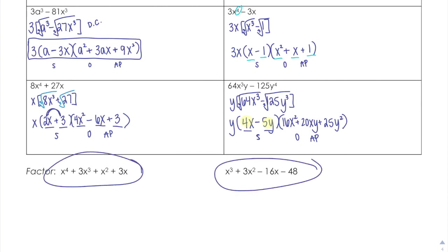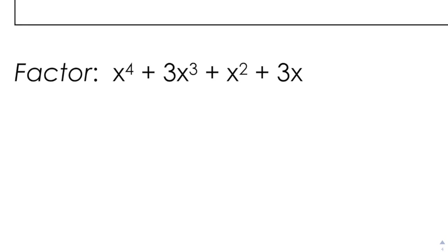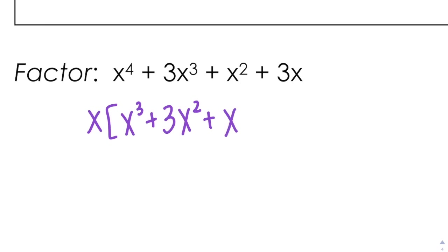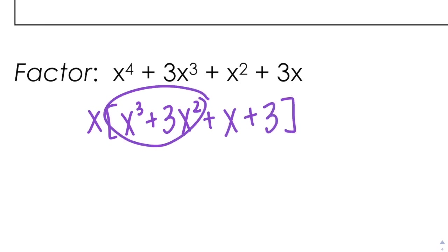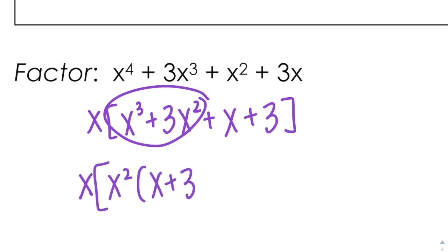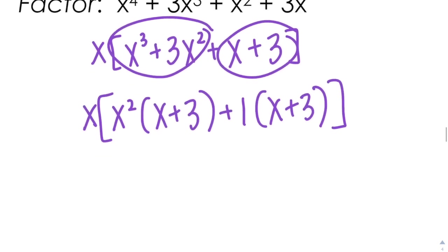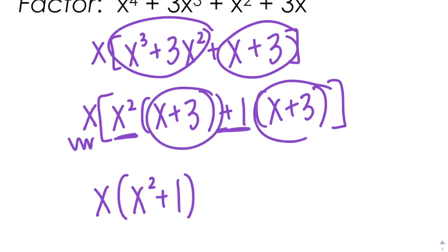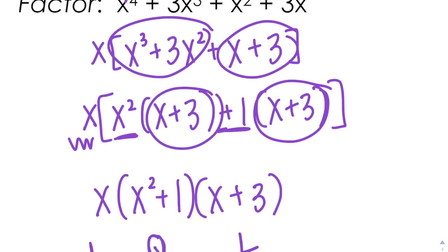Now if I look at these two down here — polynomials with four terms — they're not perfect cubes, they're not trinomials. That goes back to factoring by grouping. So in the first one, I can take out an X, leaving X cubed plus 3X squared plus X plus 3. From the first half, take out X squared, leaving X plus 3. From the second half, take out 1, leaving X plus 3. So I get X times (X squared plus 1) times (X plus 3). Linear, linear, quadratic — 1 plus 2 plus 1 is 4.